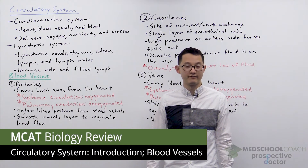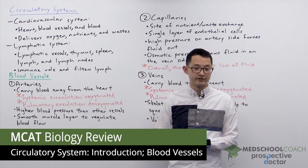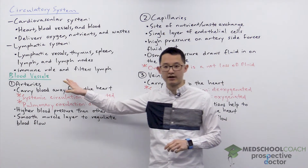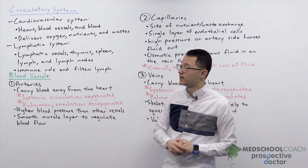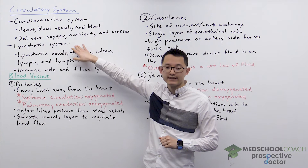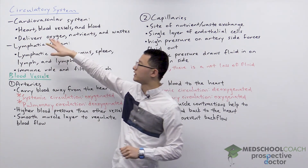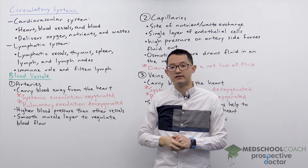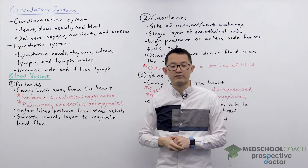In the next few videos we're going to cover the circulatory system. This video is going to introduce the circulatory system and discuss the different blood vessels in the body. The circulatory system is composed of the cardiovascular system and the lymphatic system. The cardiovascular system includes the heart, blood vessels and blood, and its primary function is to deliver oxygen, nutrients and waste throughout the body.